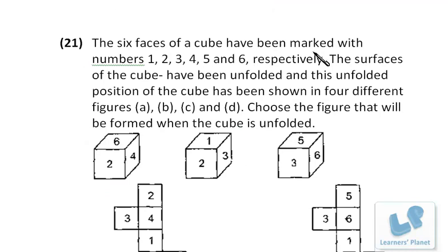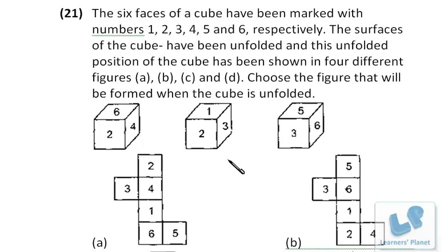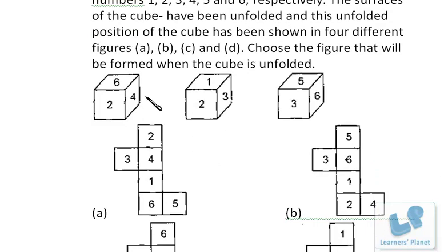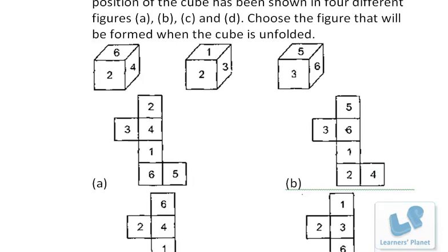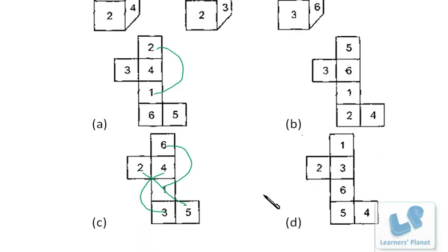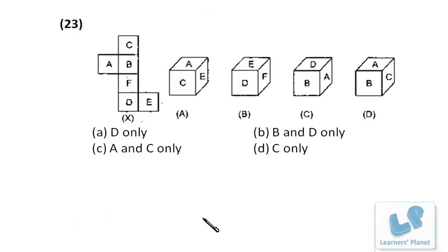This question: the six faces of a cube are marked 1 through 6 and the surface is unfolded. Choose the figure formed when the cube is unfolded. Let's check one by one: 2 is adjacent to 1, 3, 4, and 6, meaning 2 should be opposite to 5. Select the option where 2 is opposite to 5 — that is correct.